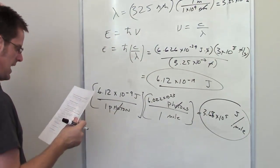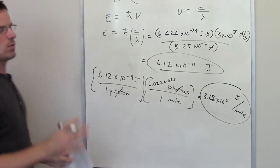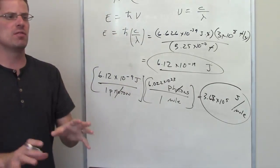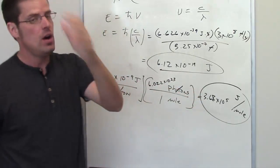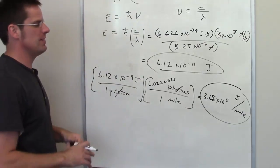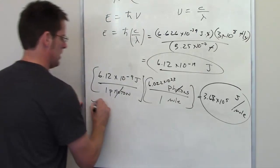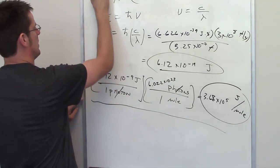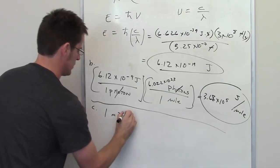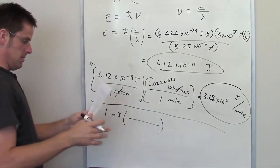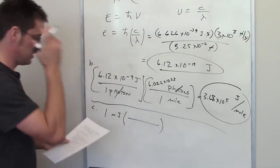Part C asks how many photons there are in a one millijoule burst of this radiation. When doing problems that involve dimensional analysis — converting from one set of units to another — I almost always start with whatever value I've been given that has no units in the denominator. Here, Part C gives me one millijoule burst and asks how many individual photons are there.